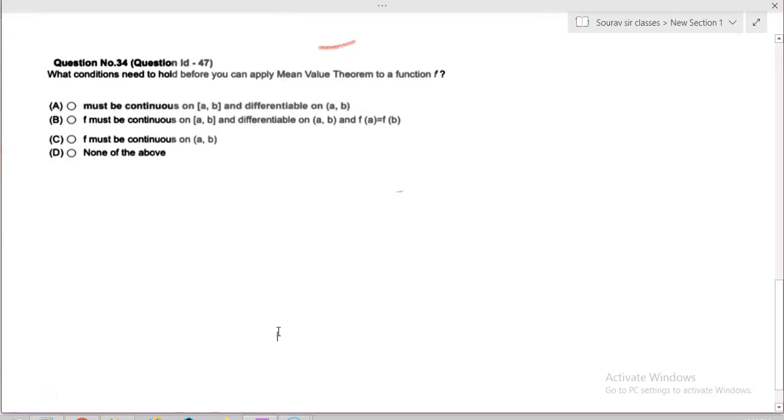Question number 34 asks what conditions must hold before you can apply Mean Value Theorem to a function f. Option A: f must be continuous on [a,b] and differentiable on (a,b). Option B: f must be continuous on [a,b] and differentiable on (a,b) and f(a) = f(b). Option C: f must be continuous on (a,b). Option D: None of the above.